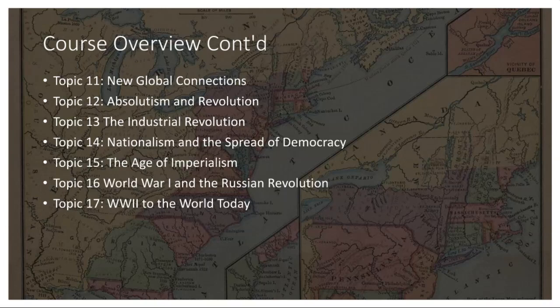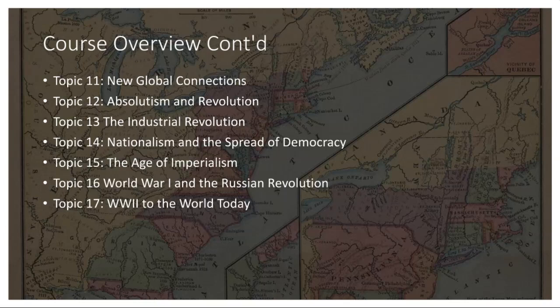Topic 14: Nationalism and the Spread of Democracy. Nationalism — the idea of a shared identity among the group — led to the unification of Germany and Italy. Democracy also began to spread as people demanded more say in their governments. Movements like the suffrage movement advocated for women's right to vote, marking steps towards equality.